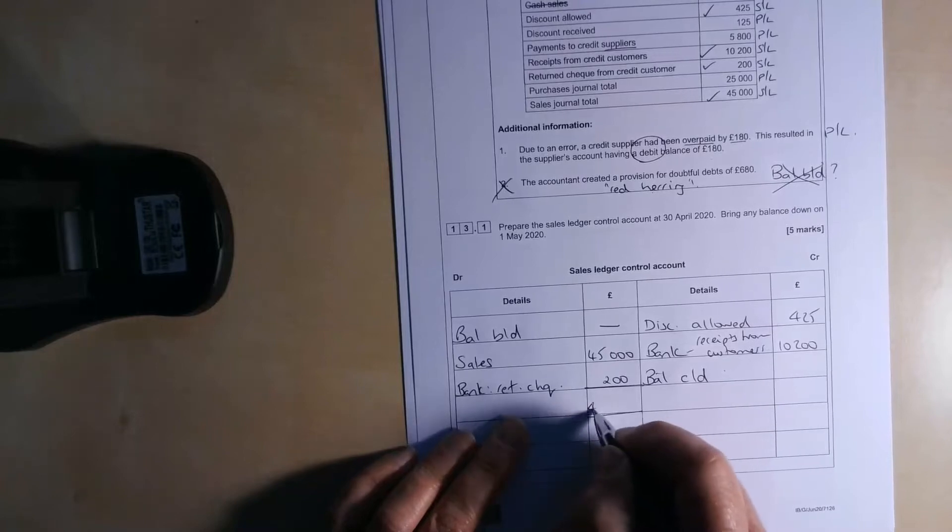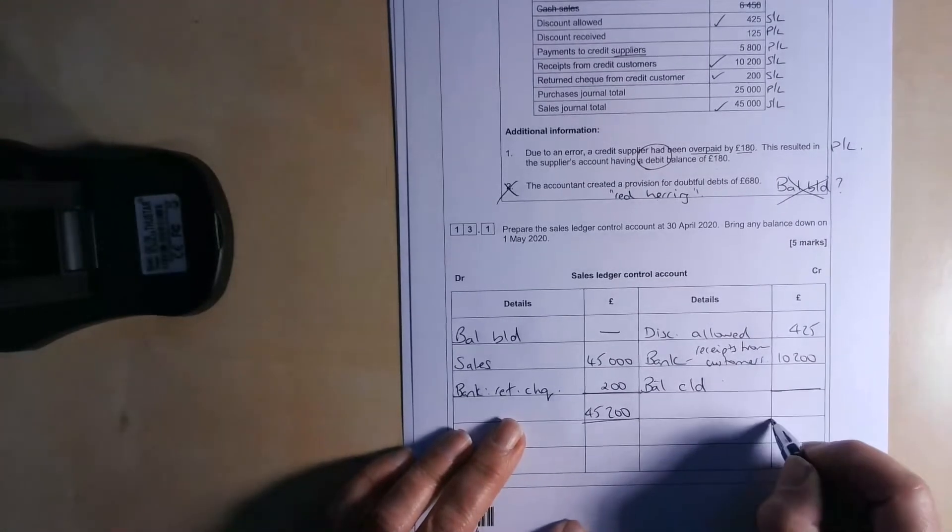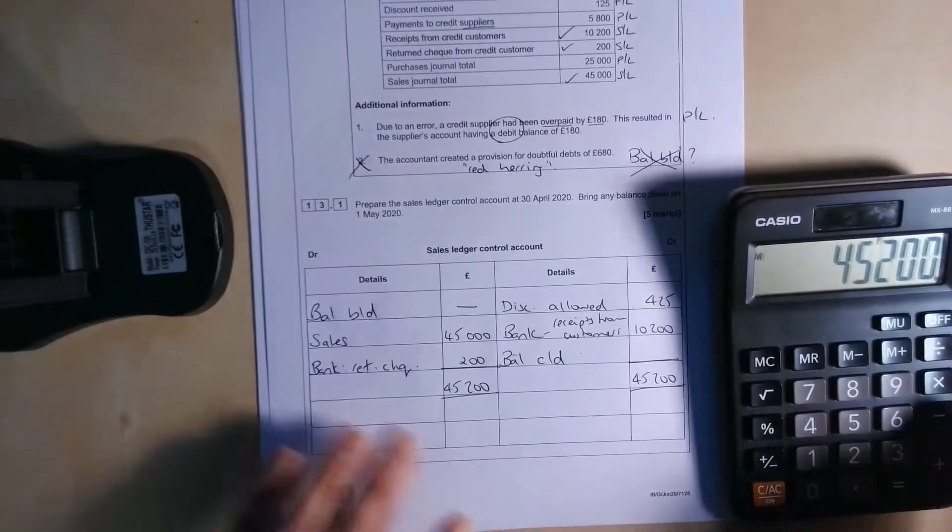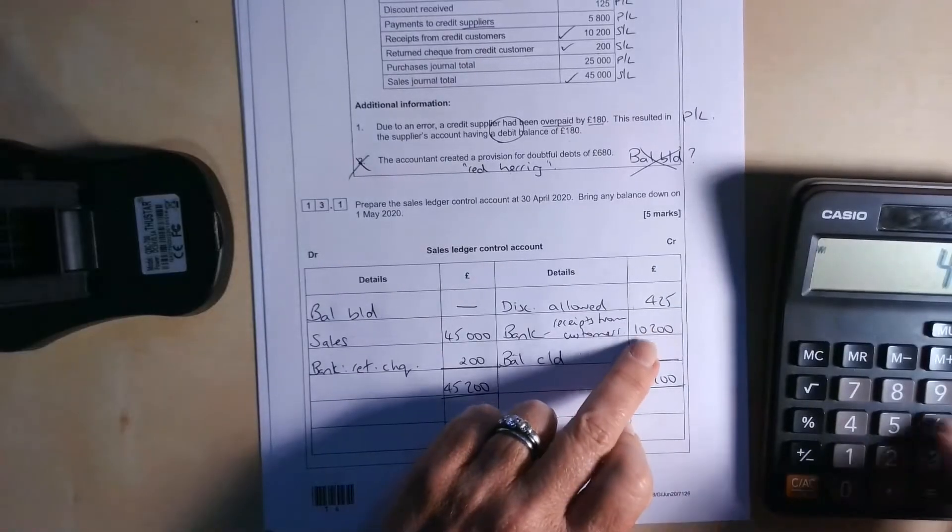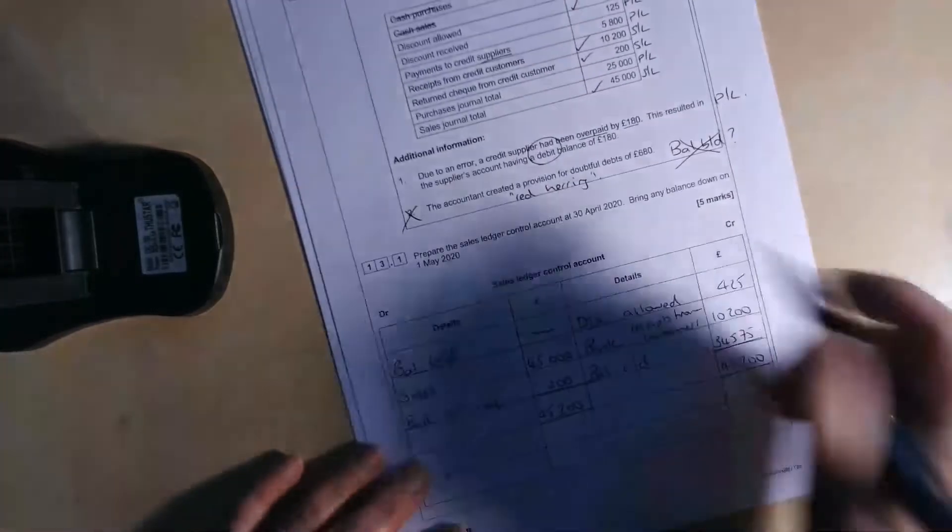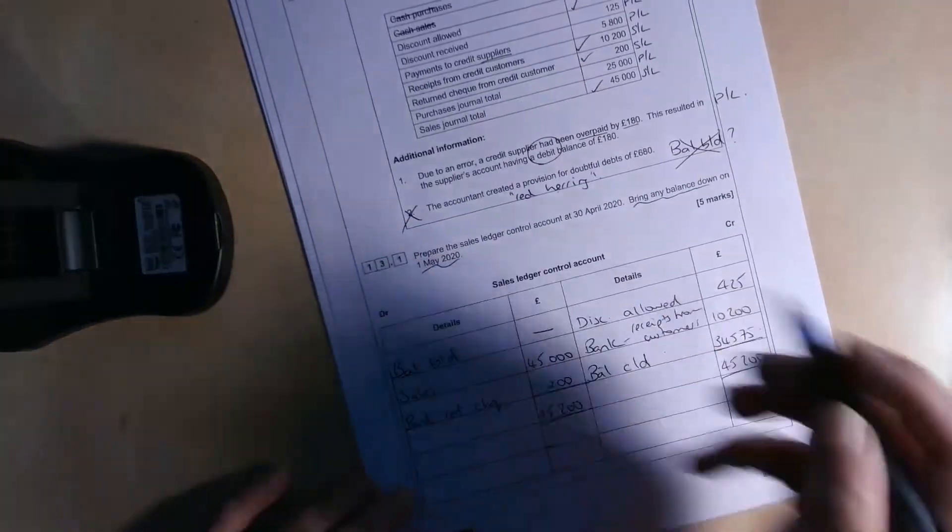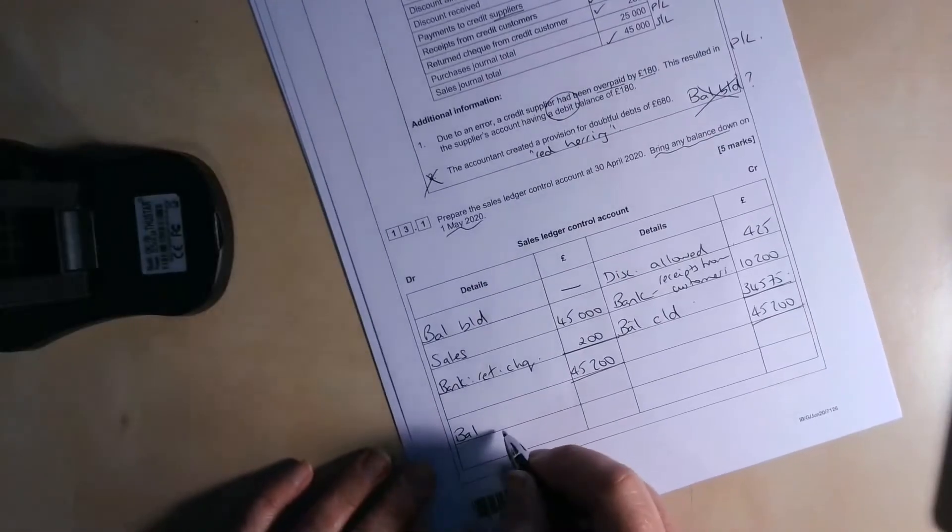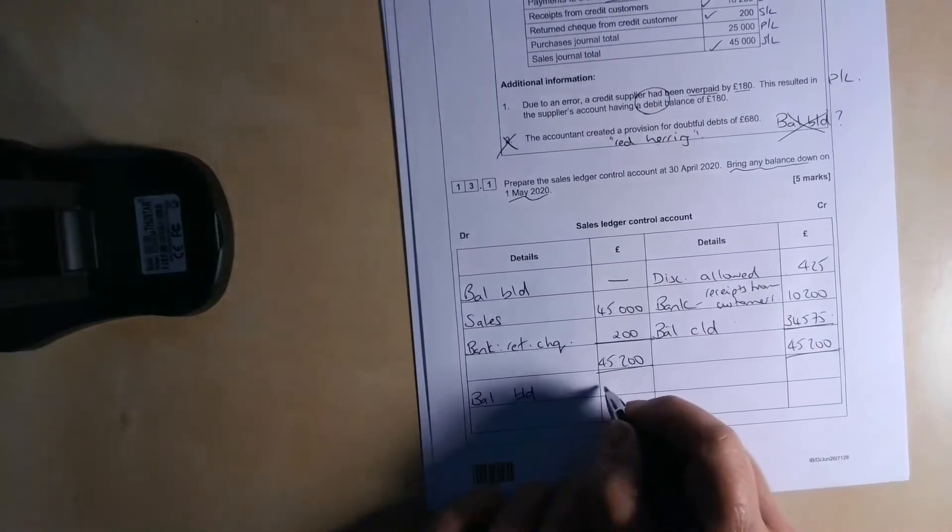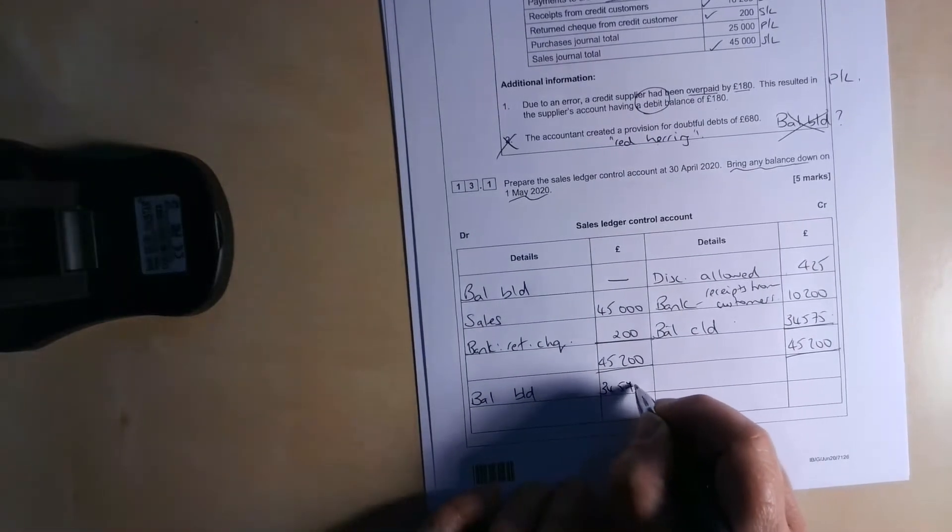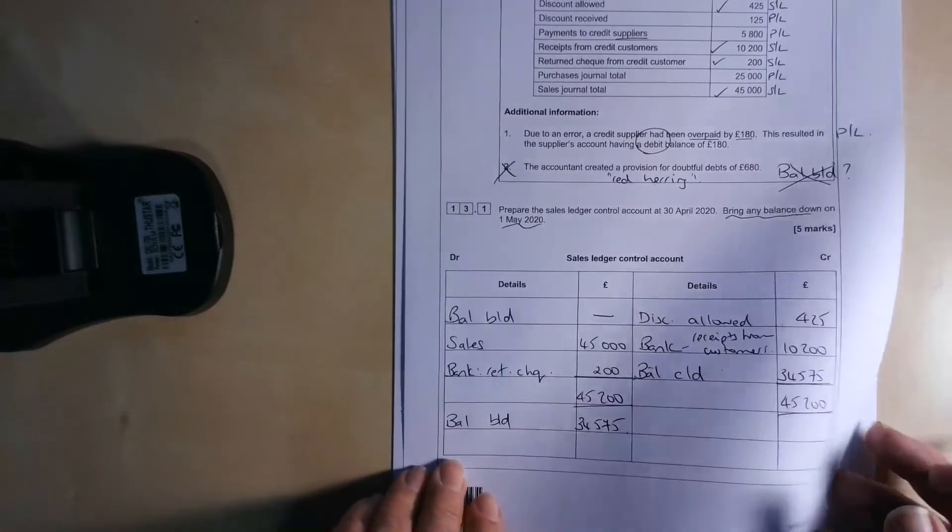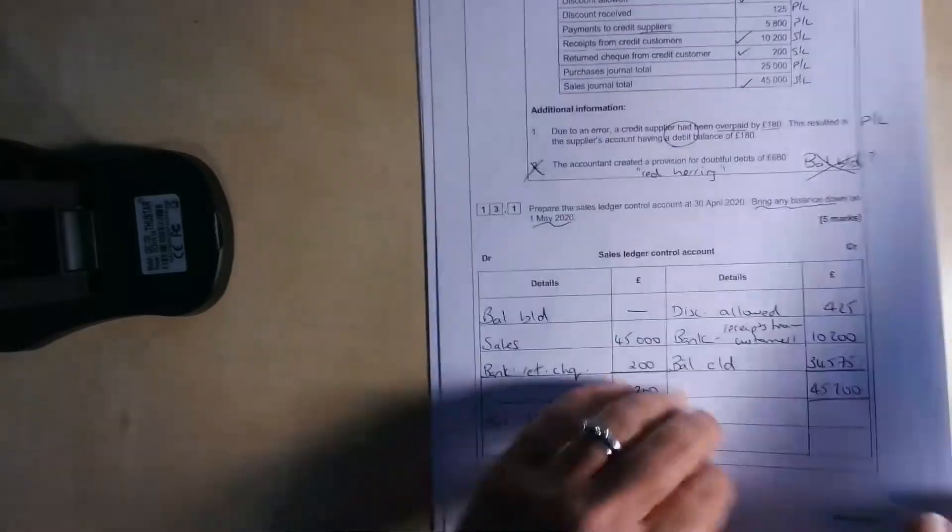But all we need to do here is work out the balance carried down. So let's just do some totals here. We've got £45,200 on the debit side. We want to make both sides the same. So if we start with our £45,200 and we take away the £425 and the £10,200, we've got a balance of £34,575. And remember that it's always going to tell us to bring down any balance on the 1st of May. So let's make sure we do that. Claim maximum marks. Apologies for the shadowiness of some, the lights are not very good today. It's a very dark and dismal afternoon. The Easter sunshine has all but vanished. Okay, so that's the sales ledger control account done. So five points in the bag for that one.